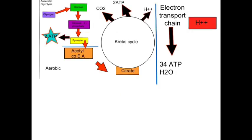The hydrogen atoms that are part of acetyl coenzyme A are transferred to chemicals called hydrogen carriers, which eventually enter the next stage of aerobic metabolism — the electron transport chain.